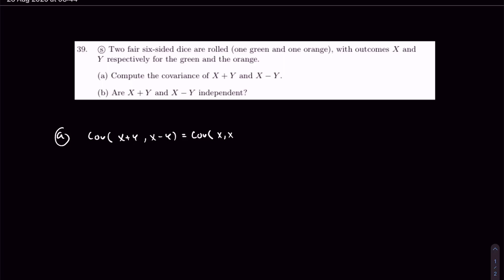Then covariance of X with Y, negative because there's a negative sign here, and then covariance of Y with X, minus covariance of Y with itself.